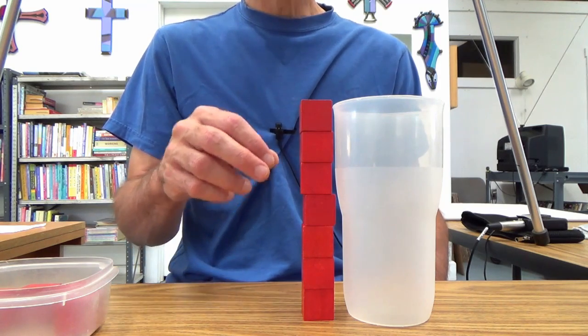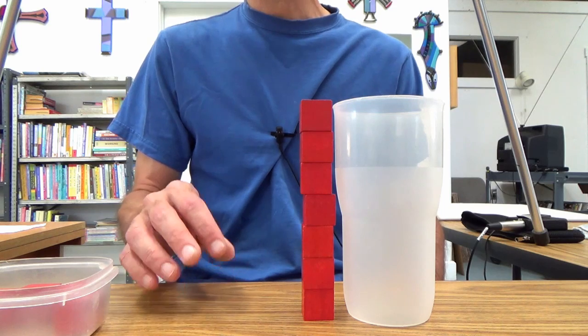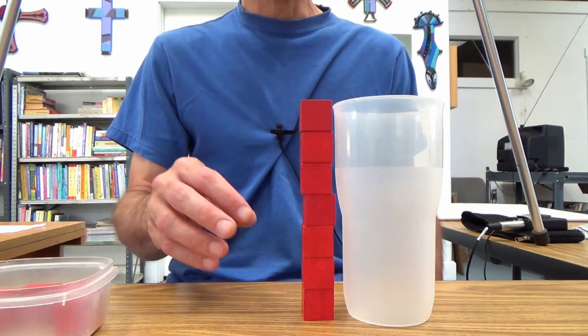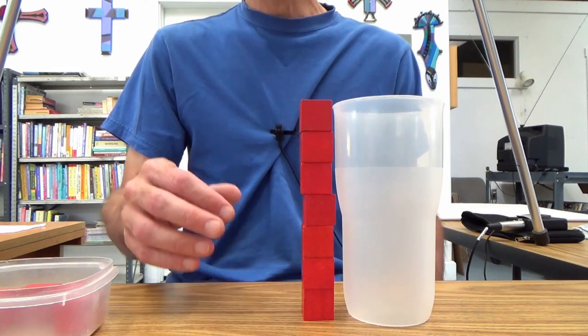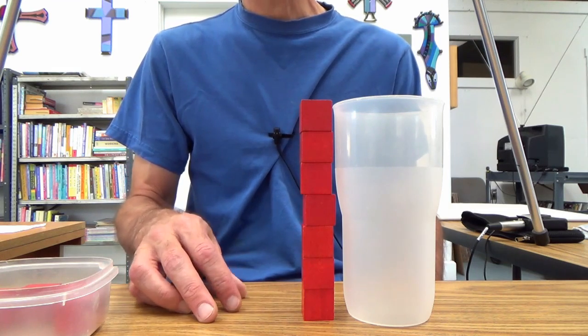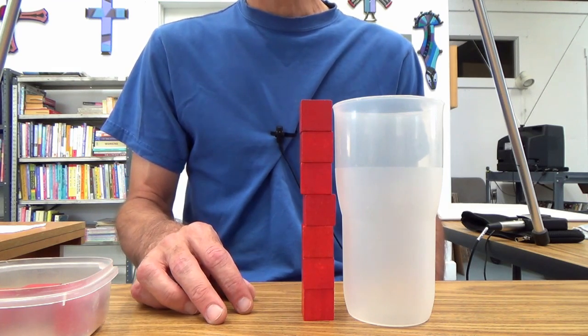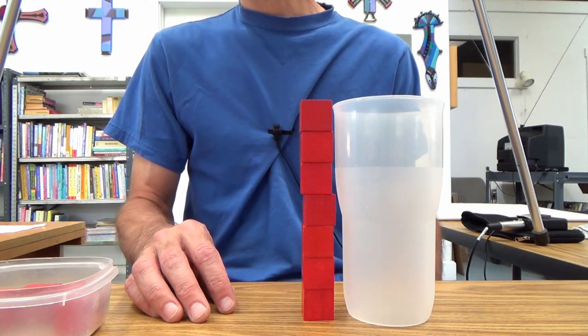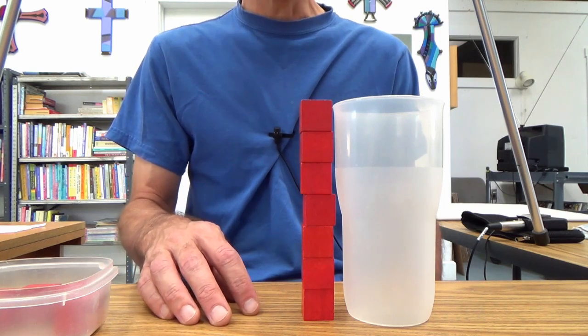And tall is another word you could throw in there. I just use it. And of course, you could say it's seven cubes in height, seven cubes high. Or you could even introduce the word tall, which is probably a word, undoubtedly, that your child already has in their vocabulary.